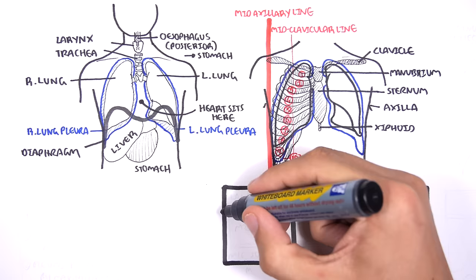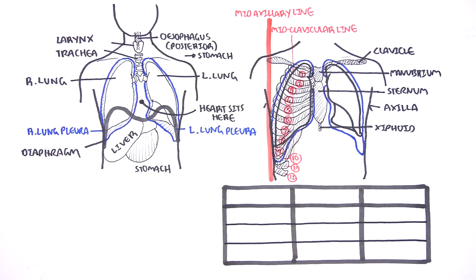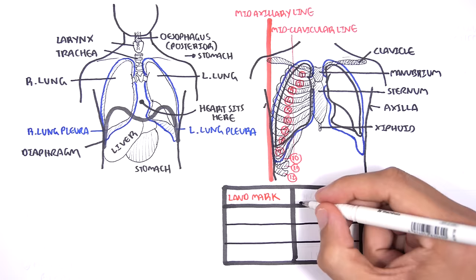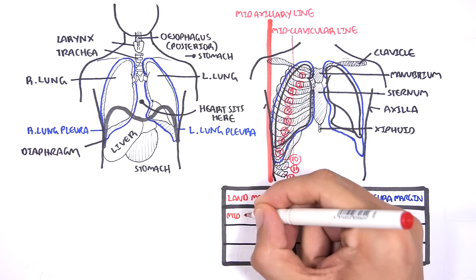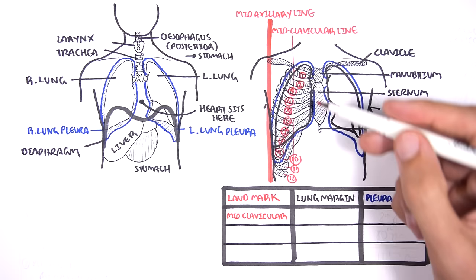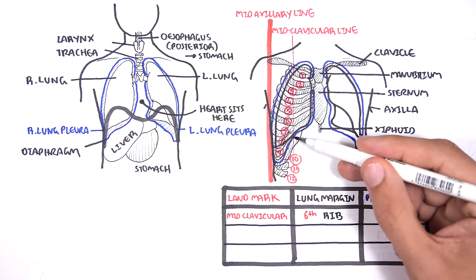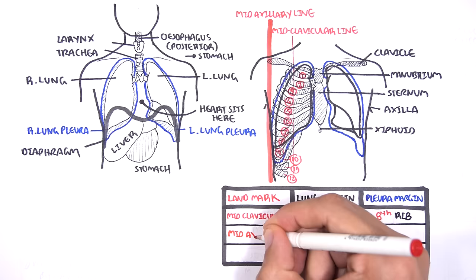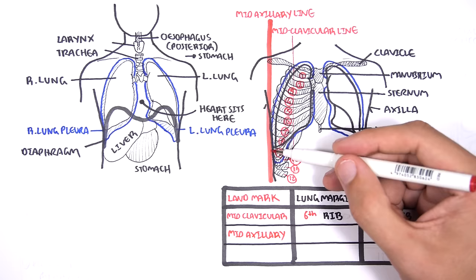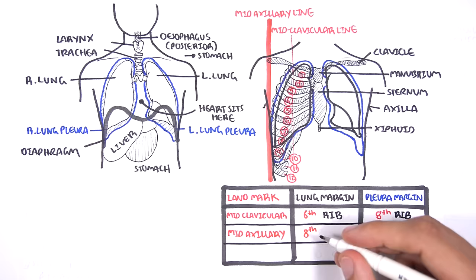Remember that each lung is enclosed in a pleural sac. The pleural margins we are talking about here is the outermost pleural membrane, called the parietal pleura. At the mid-clavicular point, the lungs should end at about the sixth rib. The pleural margin is always two ribs below this, so it ends at about the eighth rib. Looking at the mid-axillary point, the lung margins end at the eighth rib, and the pleural margin ends at the tenth rib.